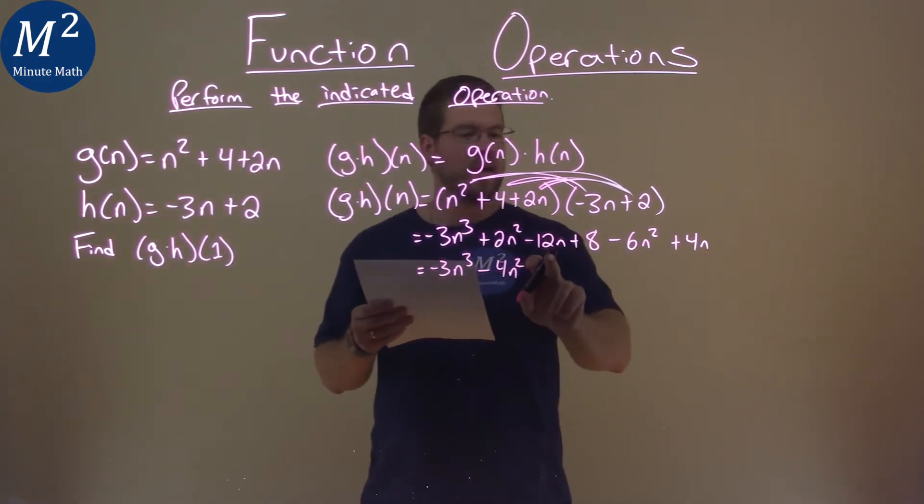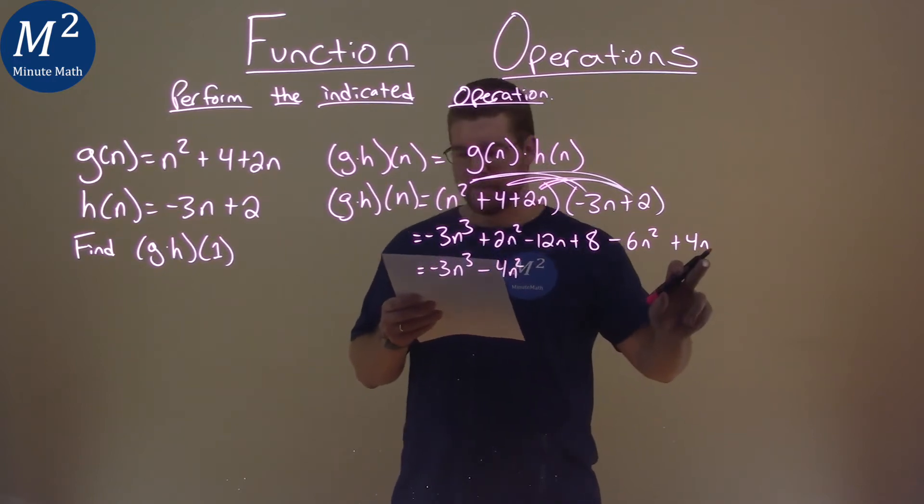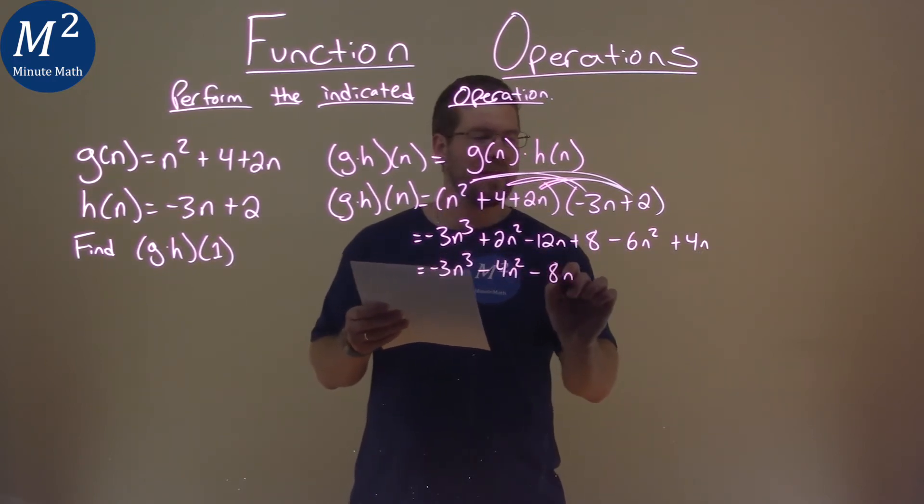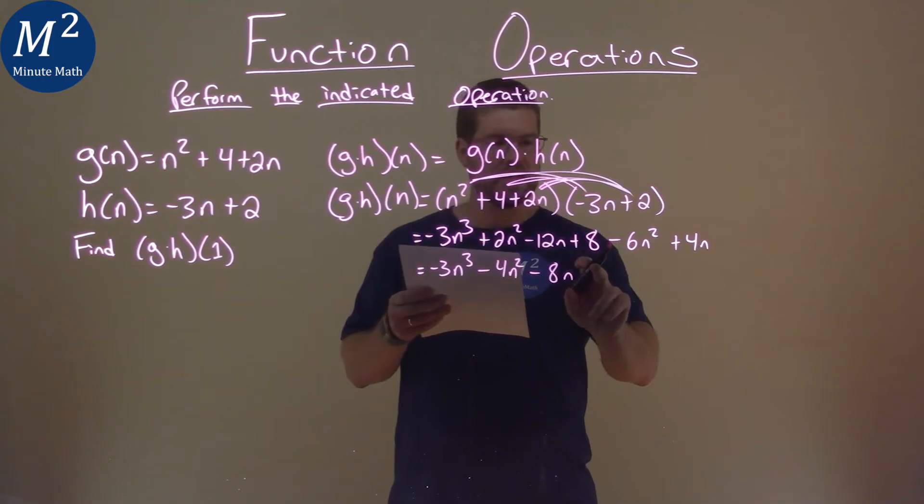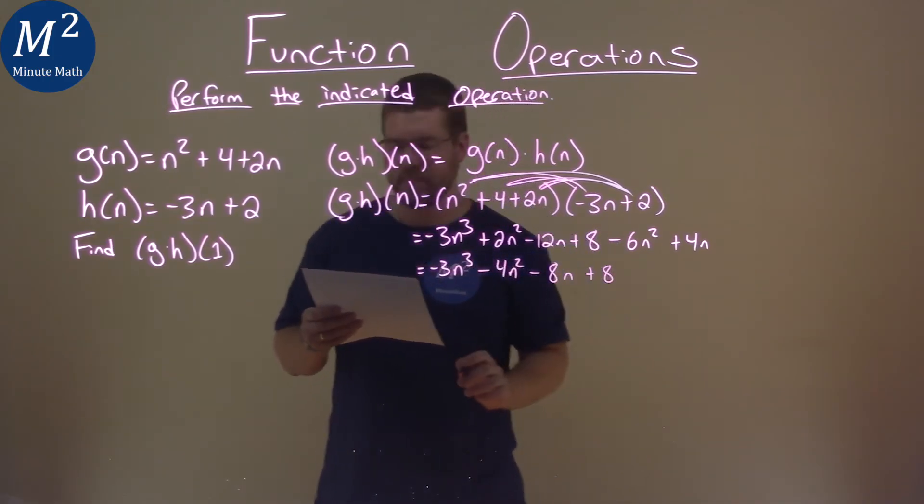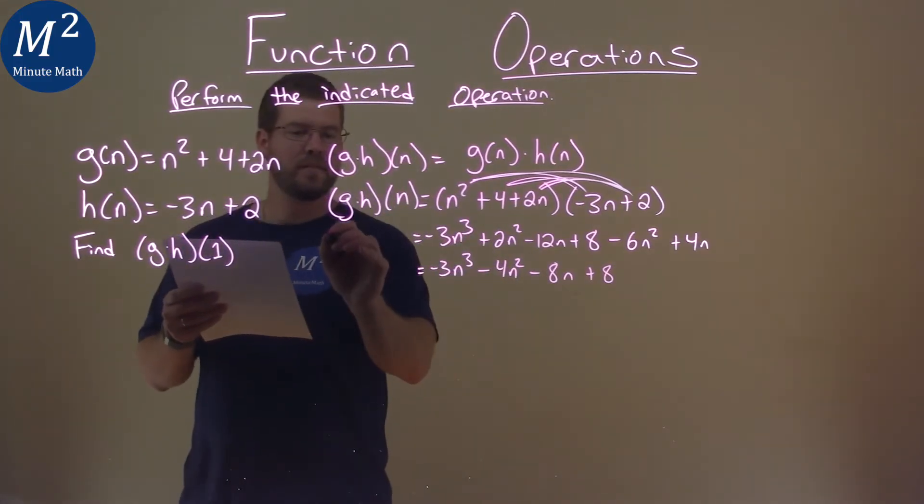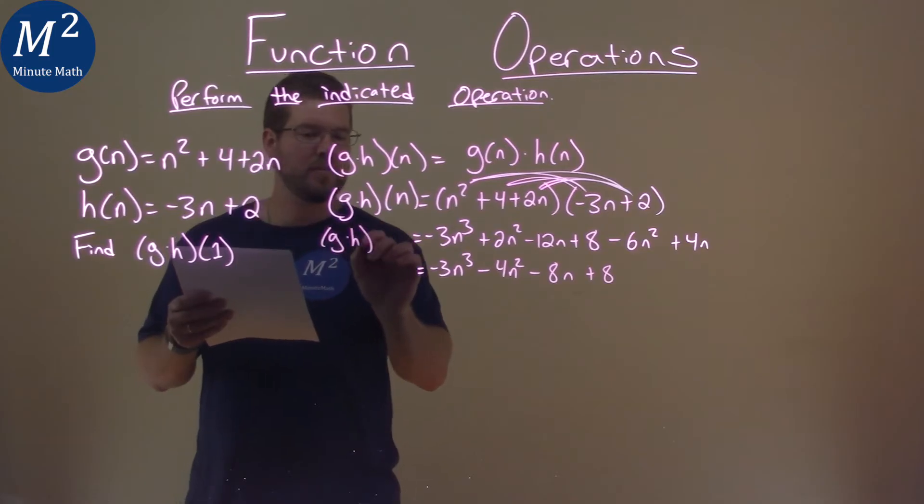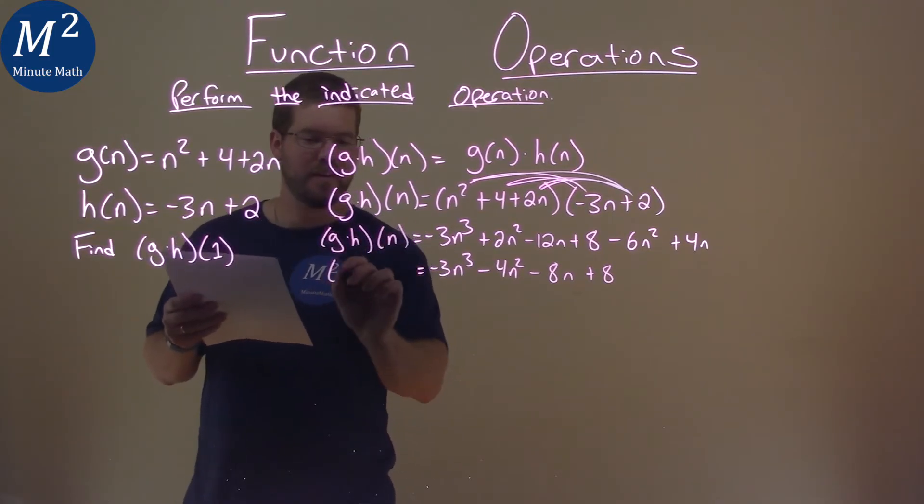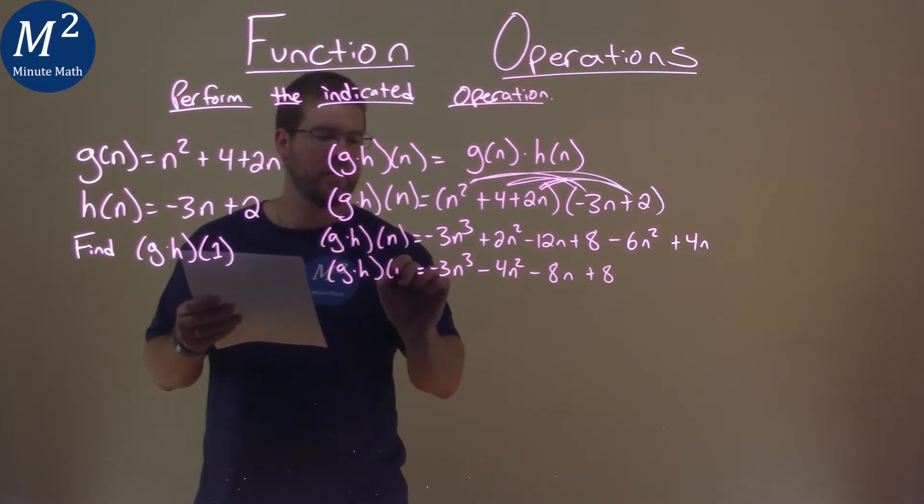Look at the single n's. We have negative 12n and 4n and that's going to be minus 8n. And lastly we just have the 8 that comes down. So again for consistency this is g times h of n.